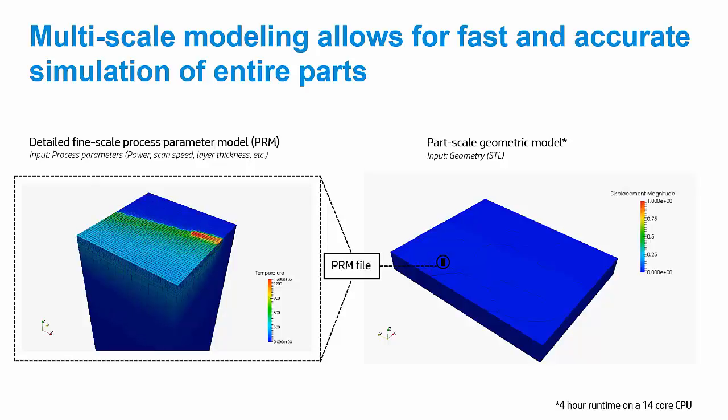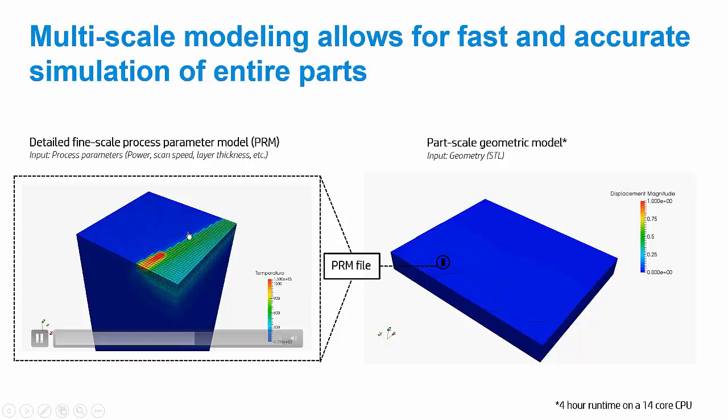If I'm depositing, say, TI-64 in an EOS machine using the performance settings, I would, in this scale, put in the material properties for TI-64, and I would input the power, scan speed, layer thickness, and so on, that EOS uses at their performance settings. And what we're going to get from this scale is we're going to get an understanding of how a particular material thermally and mechanically responds to a particular machine parameter setting.